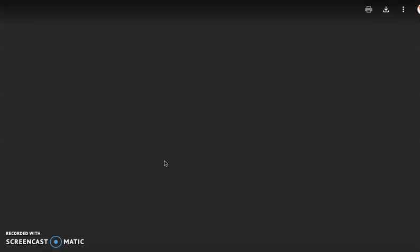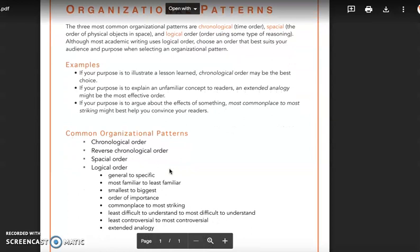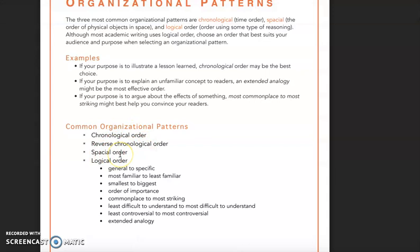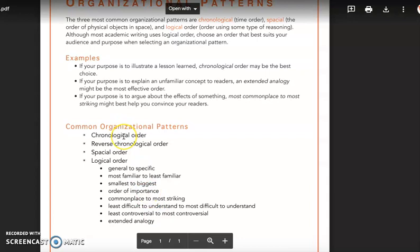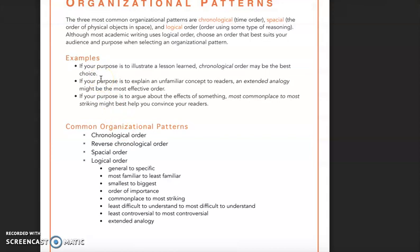Organizational patterns. We have kind of three and a half big organizational patterns: chronological time order, reverse chronological, spatial order — that's how we engage a physical space, and it's not used very frequently — and then logical order. There could be many other types of logical orders used in a written text. The thing to keep in mind is that the organizational pattern should really underscore the purpose of the piece.